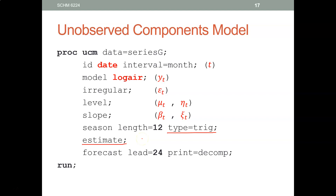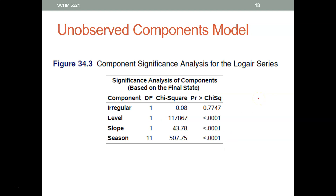You tell SAS to estimate the parameter values — that's the calibration step. Then you want SAS to generate forecasts 24 periods into the future. And you want a table printed out: whenever there is 'print,' SAS prints a table. The table name is 'decomp,' which gives you a breakdown of levels, slope, season, etc.